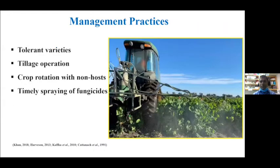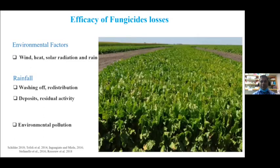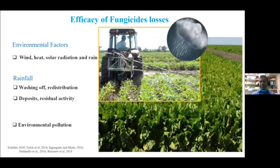For better management of Cercospora leaf spot, growers are highly recommended to use tolerant varieties if available, tillage operations, crop rotation with non-host crops for two to three years, and timely spraying of fungicide. But the efficacy of fungicide can be lost due to many reasons, especially environmental factors like wind, heat, solar radiation, rain, and irrigation. Among them, rain is an important factor — immediately after spraying, it causes fungicide losses due to washing off, redistribution of deposits, and reduced residual activity. Sometimes after spraying, if rainfall happens, the fungicide can run off to nearby waterways, causing serious environmental pollution.